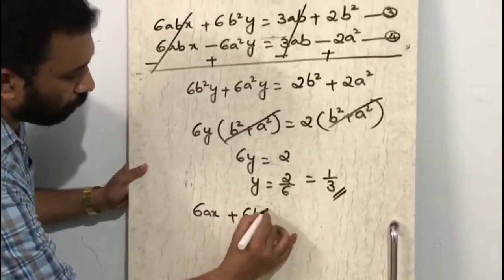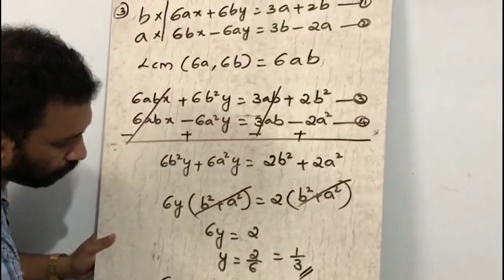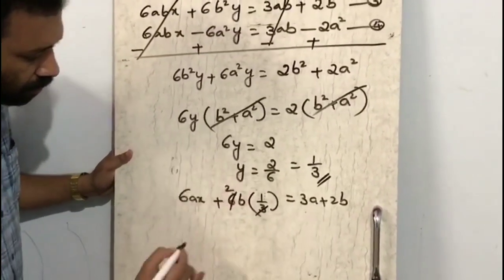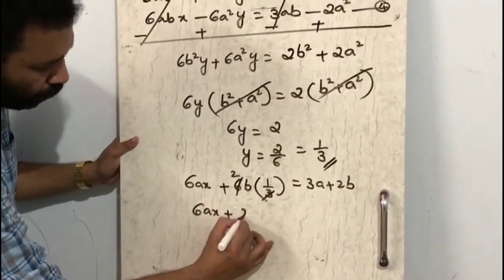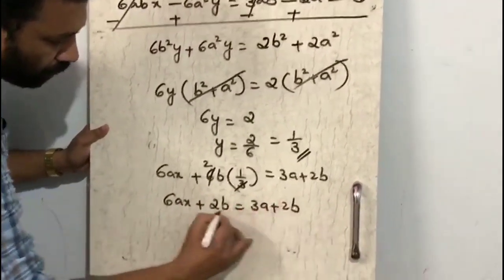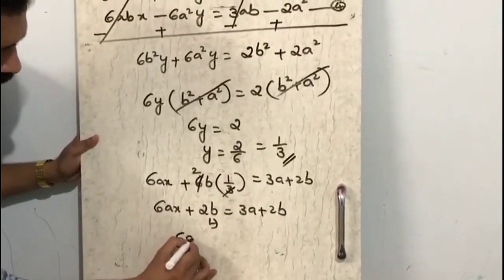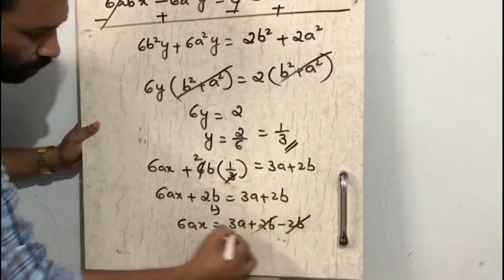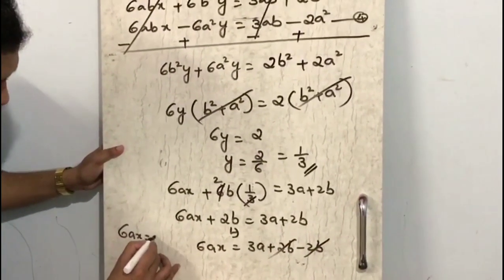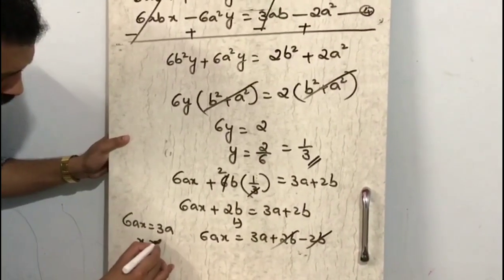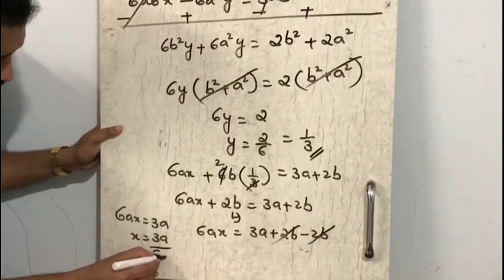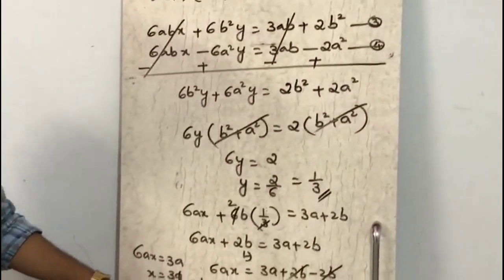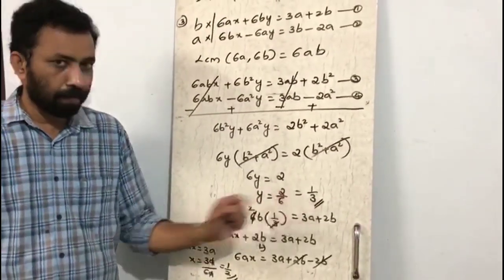Substituting y = 1/3 into the first equation: 6ax + 6b(1/3) = 3a + 2b, so 6ax + 2b = 3a + 2b. Transposing: 6ax = 3a + 2b - 2b = 3a, so x = 3a/6a = 1/2. Therefore x = 1/2 and y = 1/3.